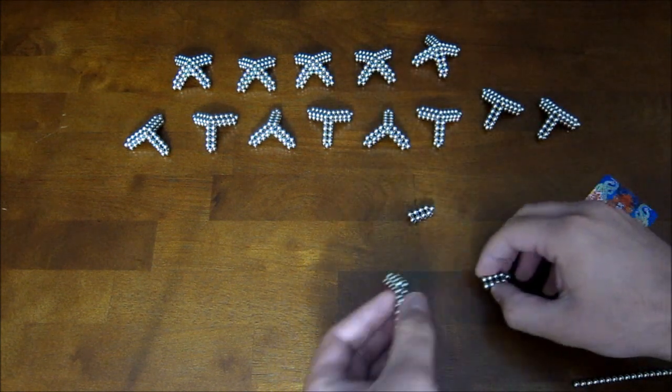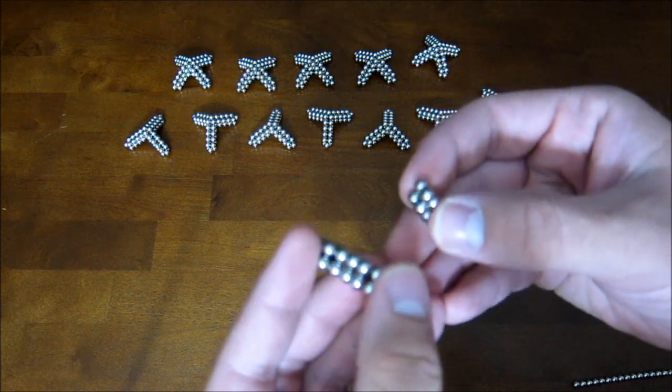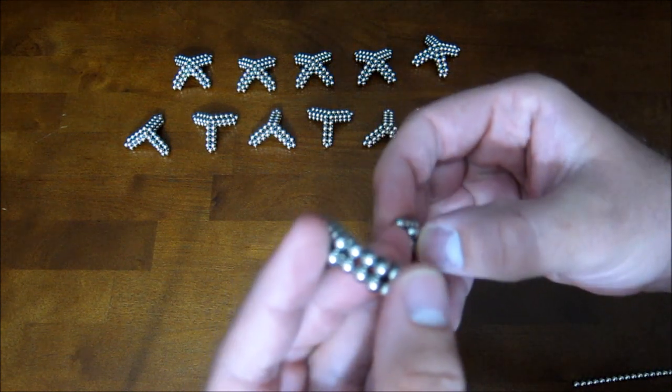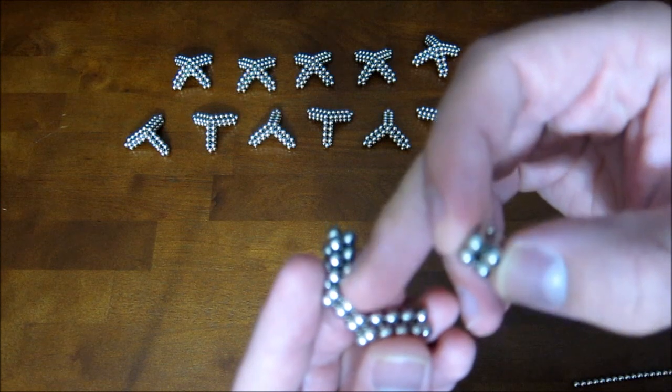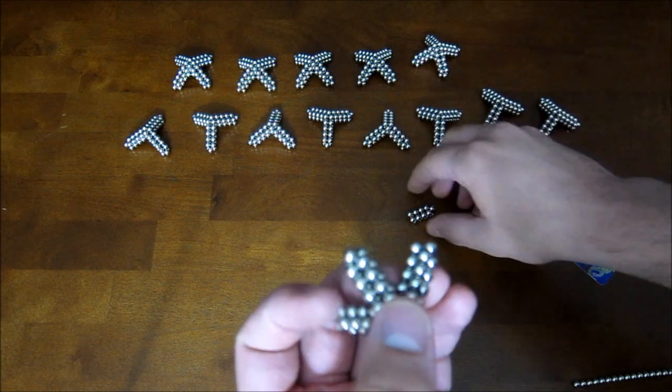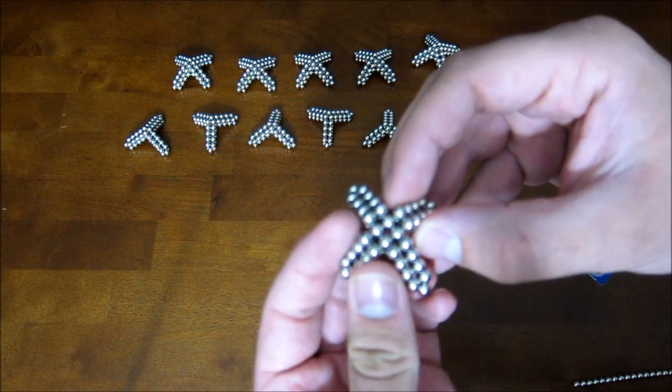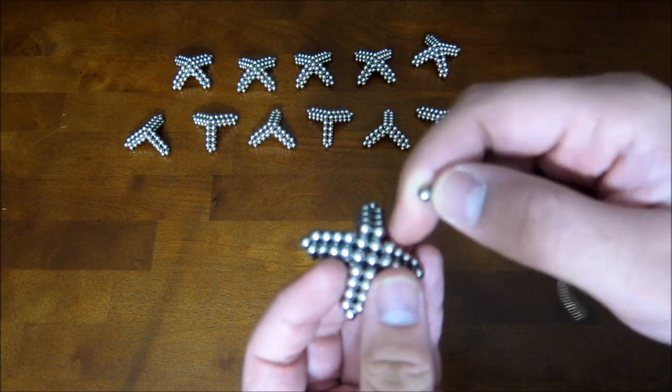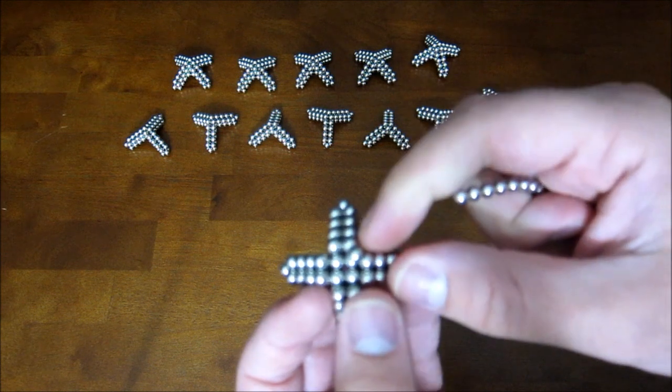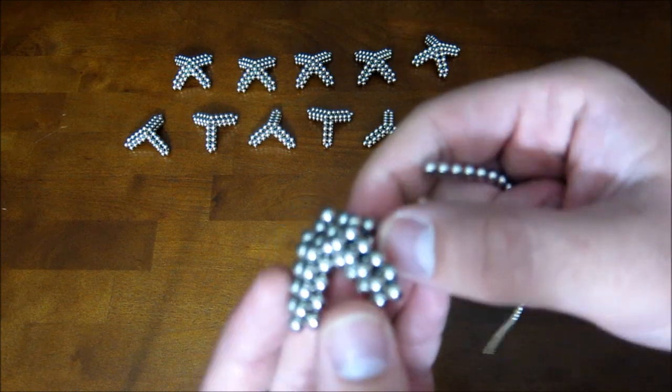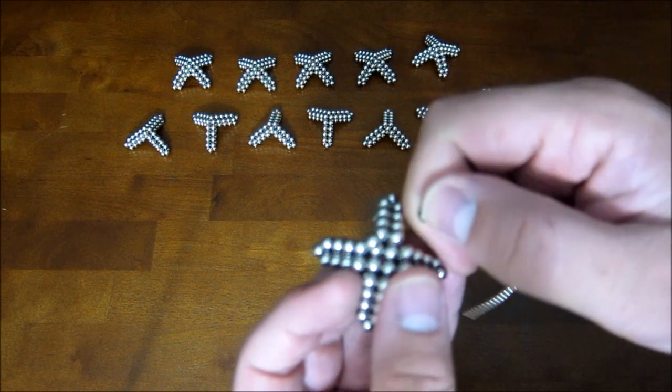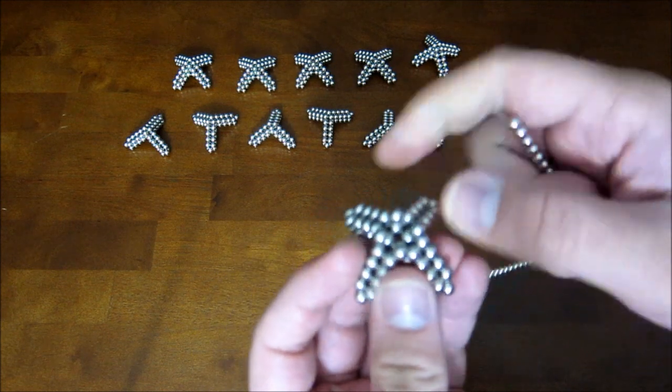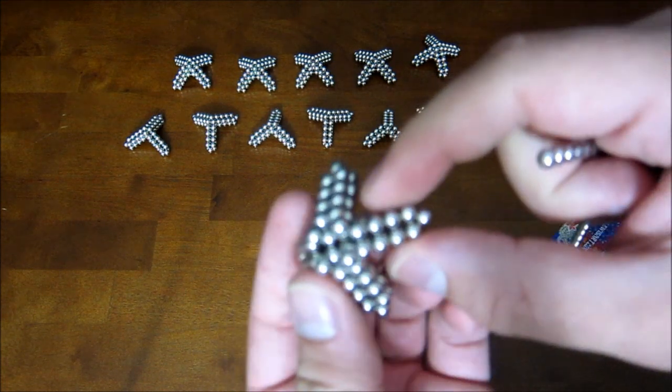Now what you want to do is take this and add that on so that these magnets attach to those two magnets there. Just like that. And now you want to add four magnets, like that one that I added right there. And you want to do that to the other three corners. So you end up with this.